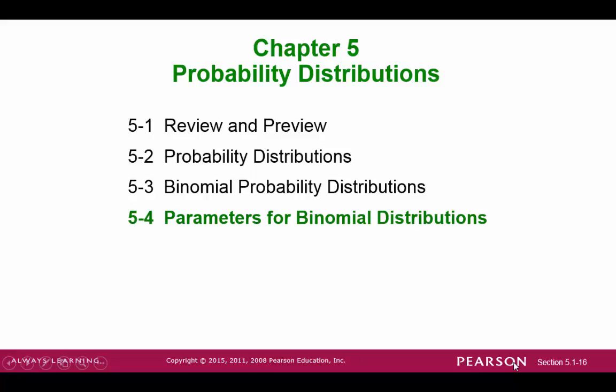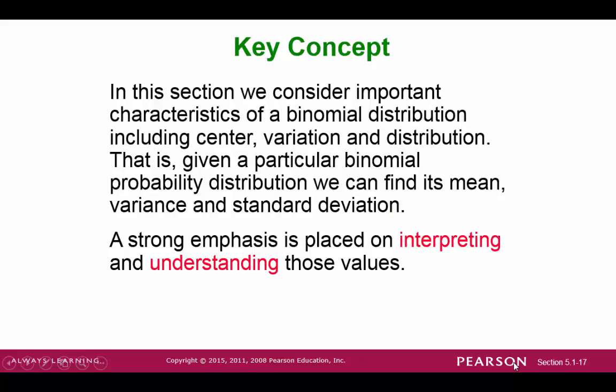Section 5-4, Parameters for Binomial Distributions. The basic idea here is to define our descriptive statistics: the mean, variance, and standard deviation. We will also interpret these values with respect to usual and unusual values.